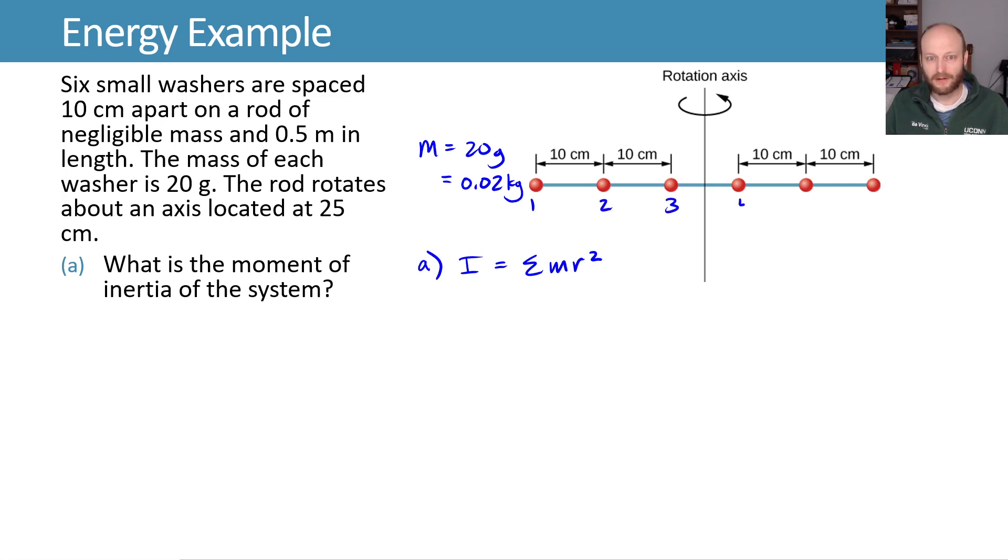We'll label each of these 1, 2, 3, 4, 5, 6 and then figure out what the distances are away. Since this is 25 centimeters from the end we know that r1 is 25 centimeters. We come in 10 centimeters we have 15 centimeters or 0.15 meters and then you have 0.5 meters to 0.3. Mass 4 and mass 5 and mass 6 are symmetric to this so I'm not going to label them separately here.